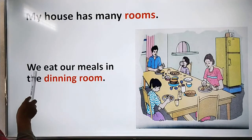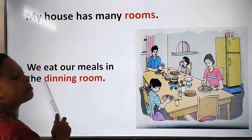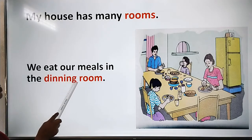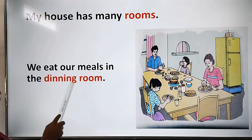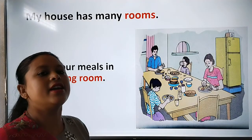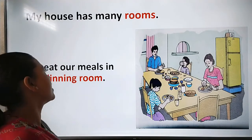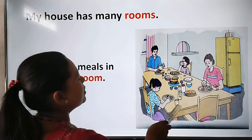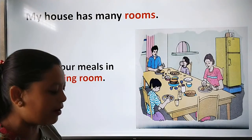We eat our meals in the dining room. So children, where do we eat our meals? We eat our meals — our food — in the dining room. Is it in the bedroom? No, it is in the dining room. That means we eat our meals in the dining room. As you can see in the picture, this is the dining table and this is the dining room. We eat our meals in our dining room. That is another room of the house.